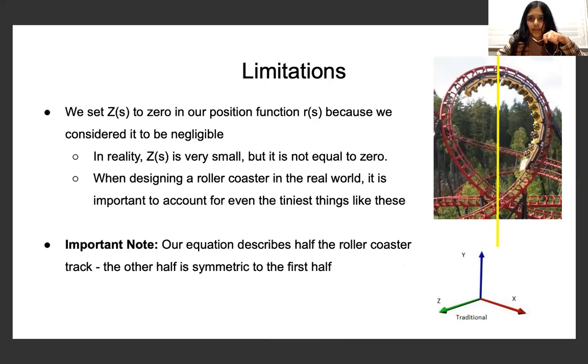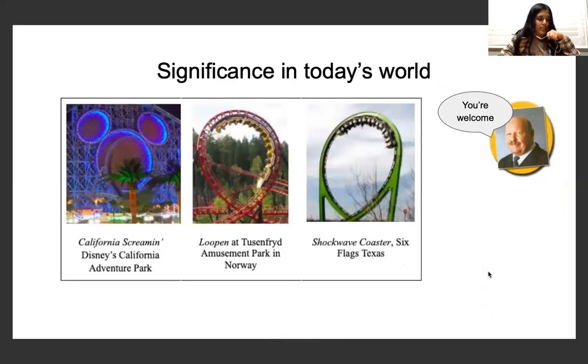And all roller coasters today, or all loop-de-loops today, are built in this fashion. So significance in today's world, most of our loop-de-loops or vertical loops in amusement parks today are based on clothoids. So we have Schwarzkopf to thank for that, for our rides like California Screaming, amusement parks all over the world, and some you may have even ridden, such as the one in Six Flags Texas and Six Flags California.